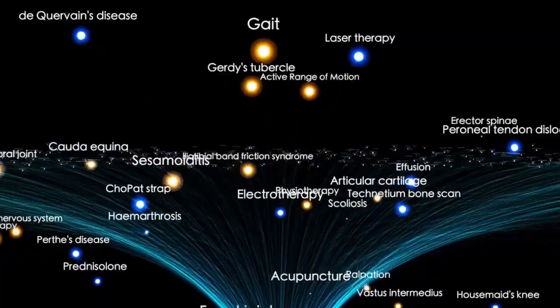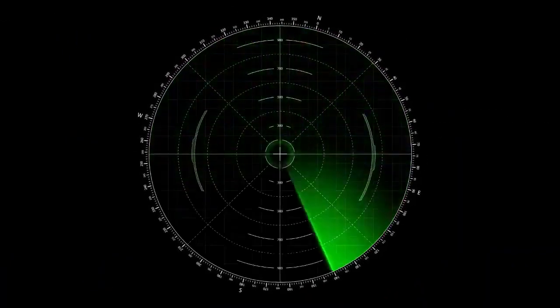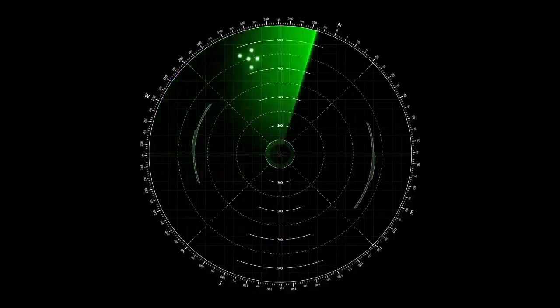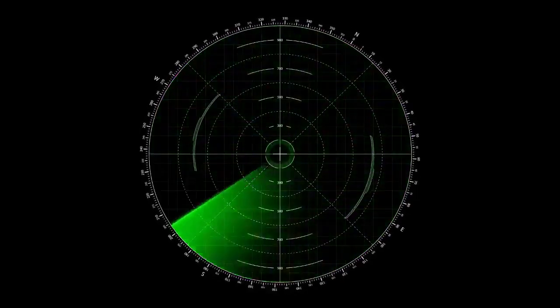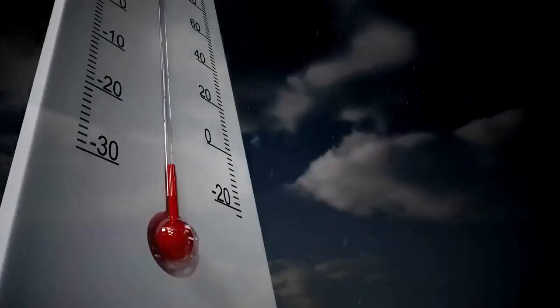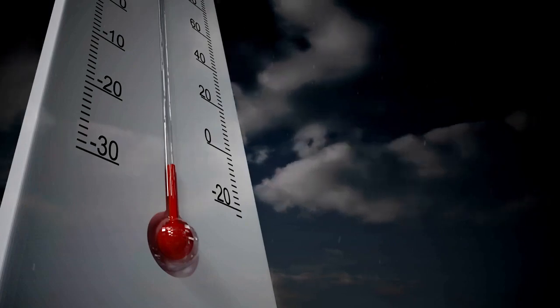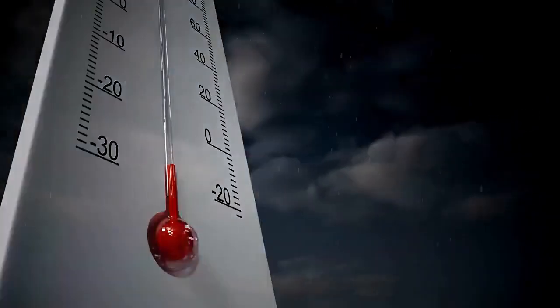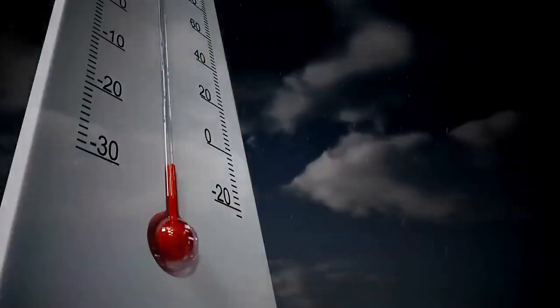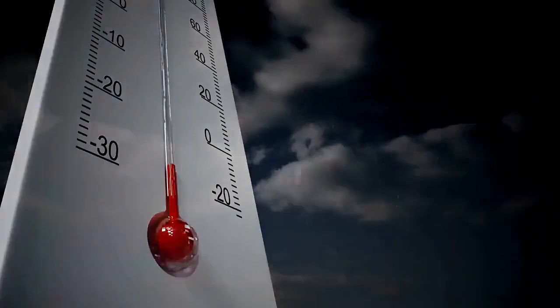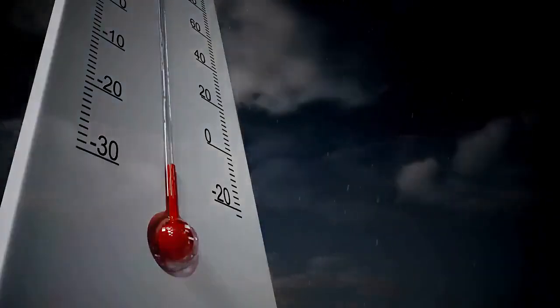Now here's where things get even more complicated. Betelgeuse isn't one to remain stationary. No way, it's a runaway star that has been expelled from its comfortable place of origin within the Orion OB-1 Association, the same star group as Orion's belt stars. It's traveling through the interstellar medium at an awesome velocity of 30 kilometers per second, casting a bow shock measuring more than 4 light-years across.